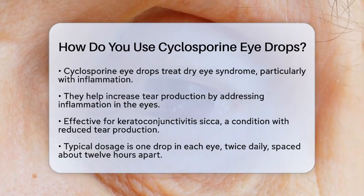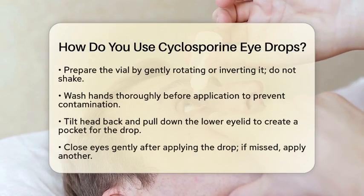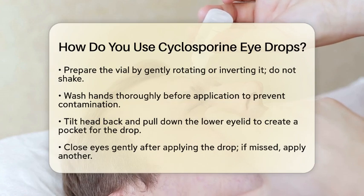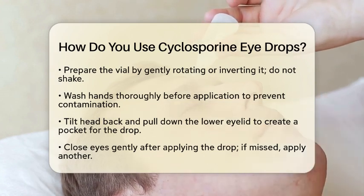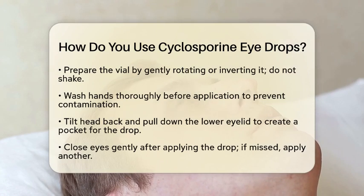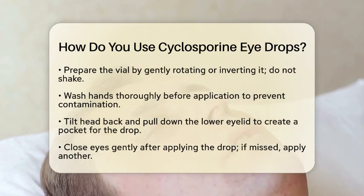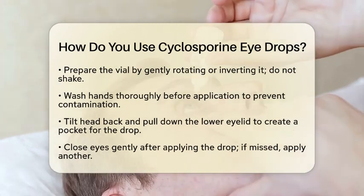When using Ciclosporine Eye Drops, the typical dosage is one drop in each eye twice a day. Aim to space these doses about 12 hours apart for optimal results. Before you apply the drops, it is important to prepare the vial. Gently rotate or invert it a few times to mix the emulsion. However, do not shake the vial, as this can affect the formulation.